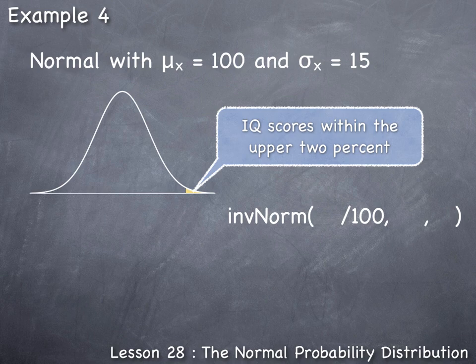The first value we designate as K/100, where K represents the percentile, which is the percentage less than. But we're looking for IQ scores within the upper 2%. The inverse norm command wants the lower percentage. Since the entire normal curve is 100%, and we're looking for the upper 2%, that leaves us with 100 - 2 = 98% less than that.